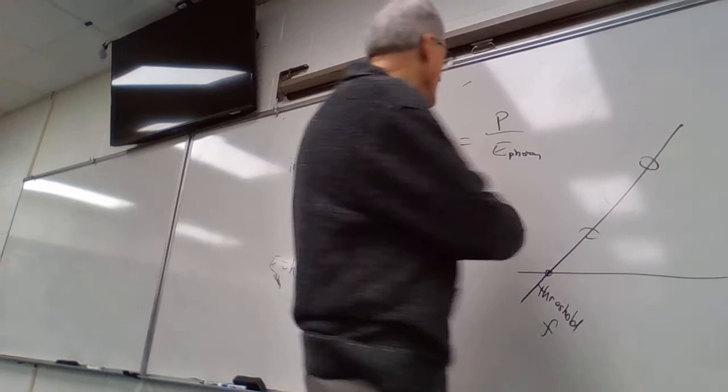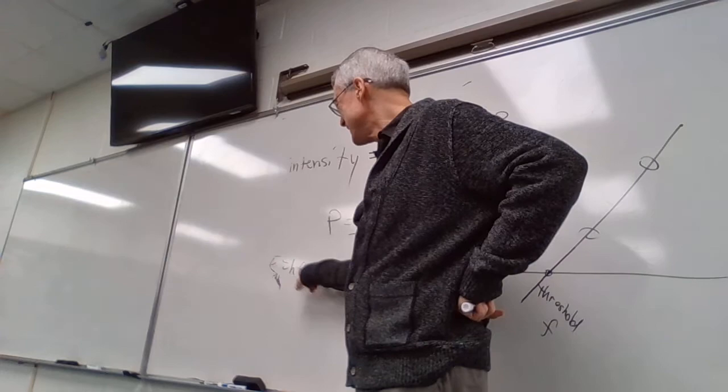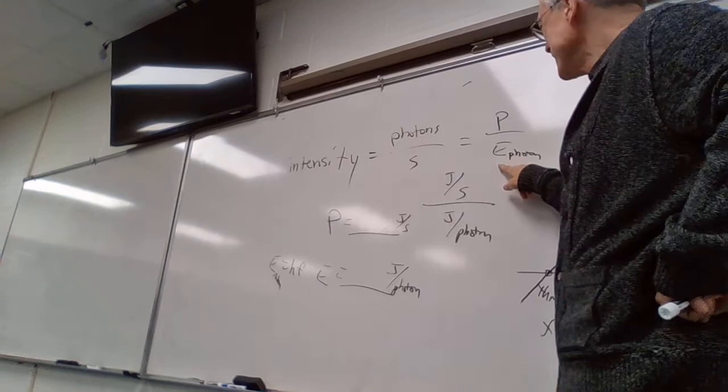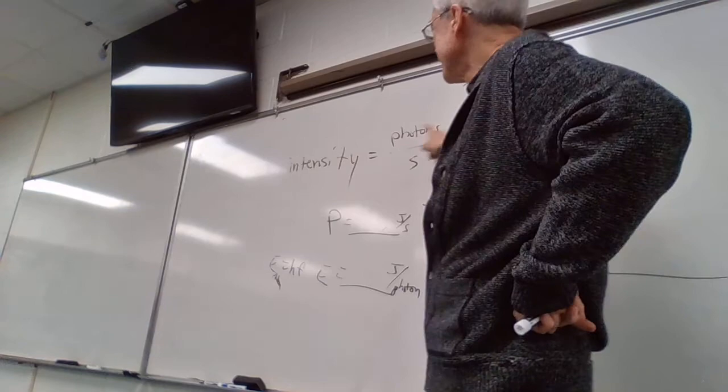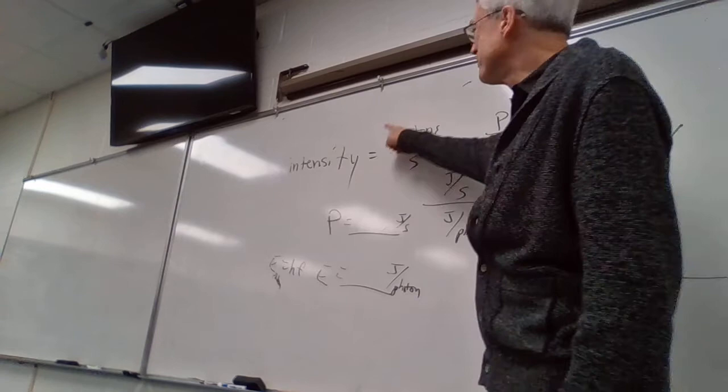The reason you've always thought of power as brightness is that in most problems we're comparing the same color of light — same frequency, same energy per photon. So power is directly proportional to intensity. If you go up to 100 watts, that's more photons coming out of that bulb every second. P over E equals photons per second — that's brightness, intensity.